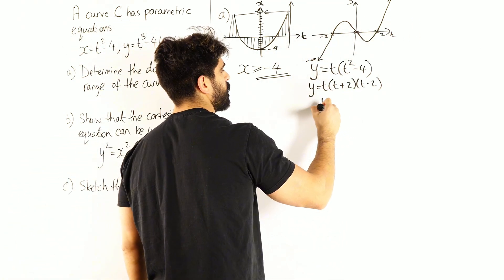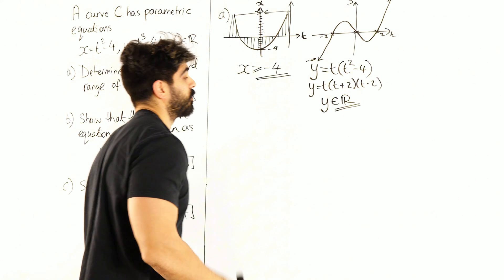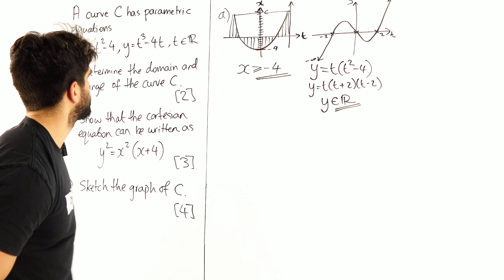So here we're just going to say y is an element of the real numbers, depending on the t value. So here we go, that is that first bit done.